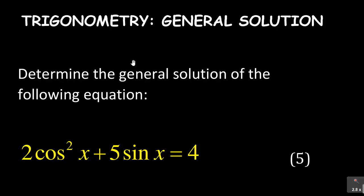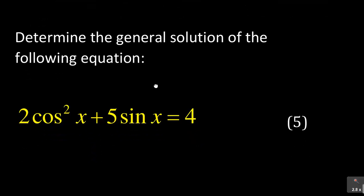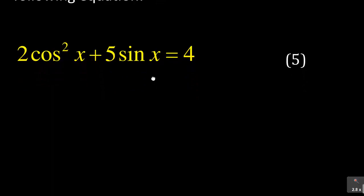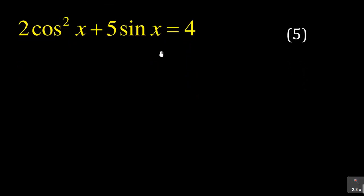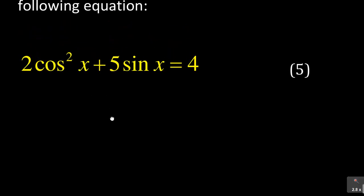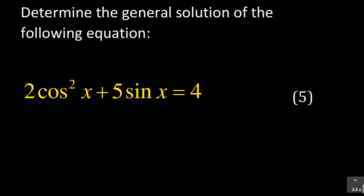I encourage you to make sure that you follow all five parts of these lessons. Now let us look at the second question. It says: determine the general solution of the following equation, and this particular question is five marks. The first thing is I need to solve for x. We have: two cos squared x plus five sine x is equal to four.